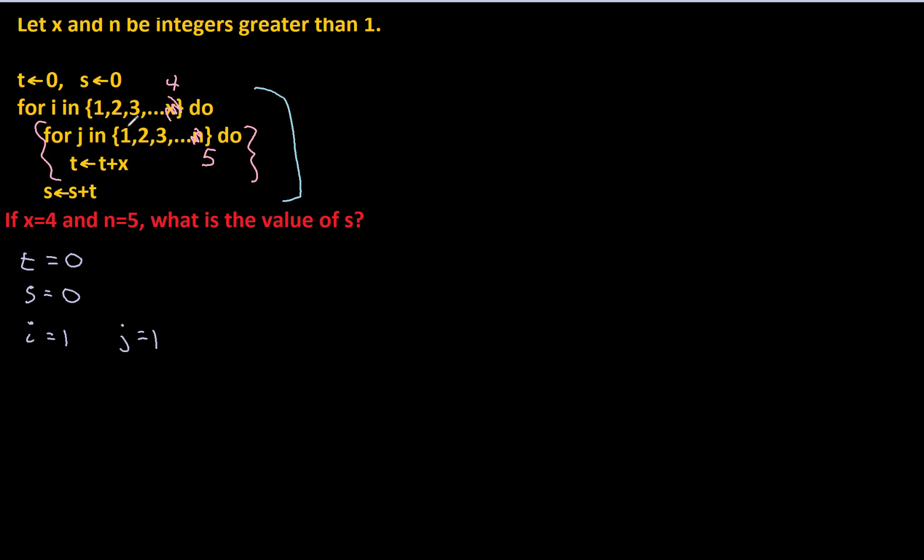We're going to set t equal t plus x. So t is currently 0. So t is going to be equal to 0 plus x, which is set to be 4. So t equals 4. That's great. We've got a value for t. And we have to keep looping through j. So now when j is 2, I have to do t equals t plus x. So t equals, well, the current value for t is 4. And I'm going to add x to that. So that gives me a new value for t, which is 8.